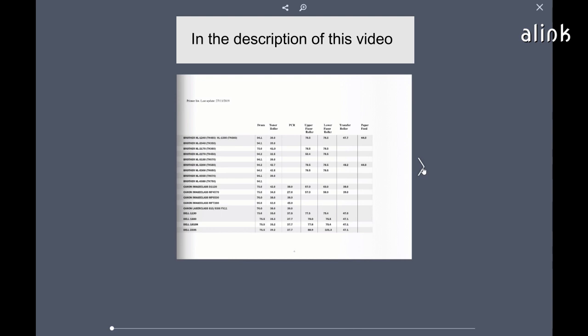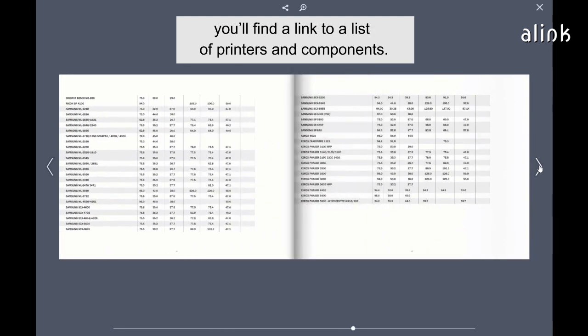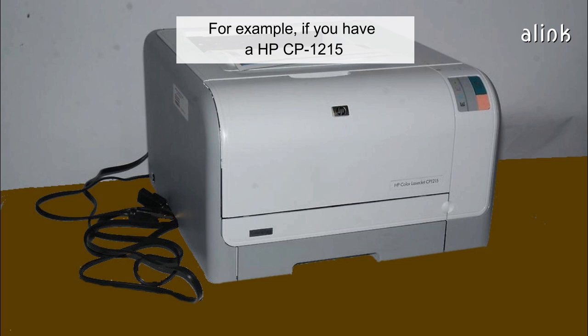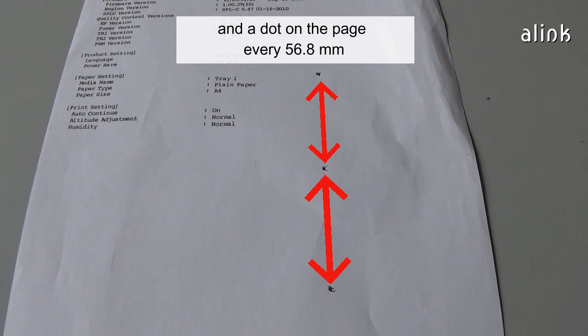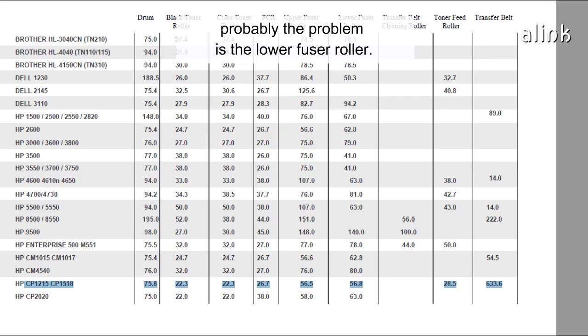In the description of this video, you'll find a link to a list of printers and components. For example, if you have an HP CP 1215 and a dot on the page every 56.8 millimeters, probably the problem is the lower fuser roller.